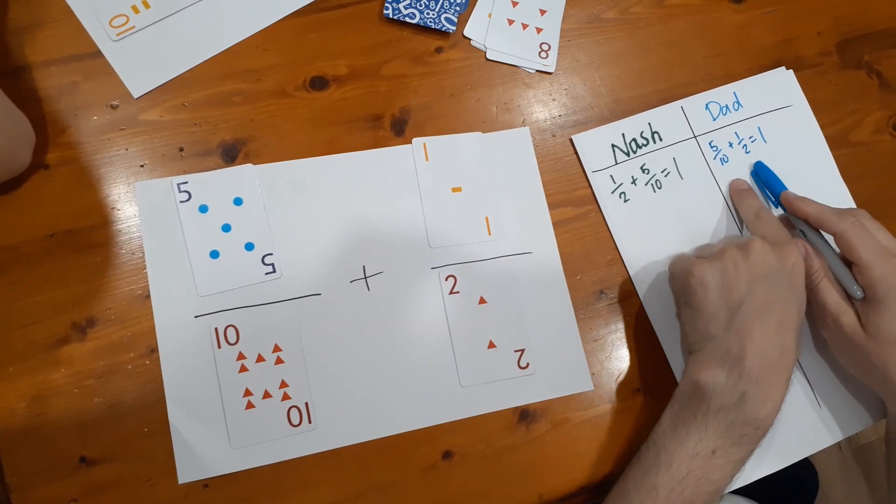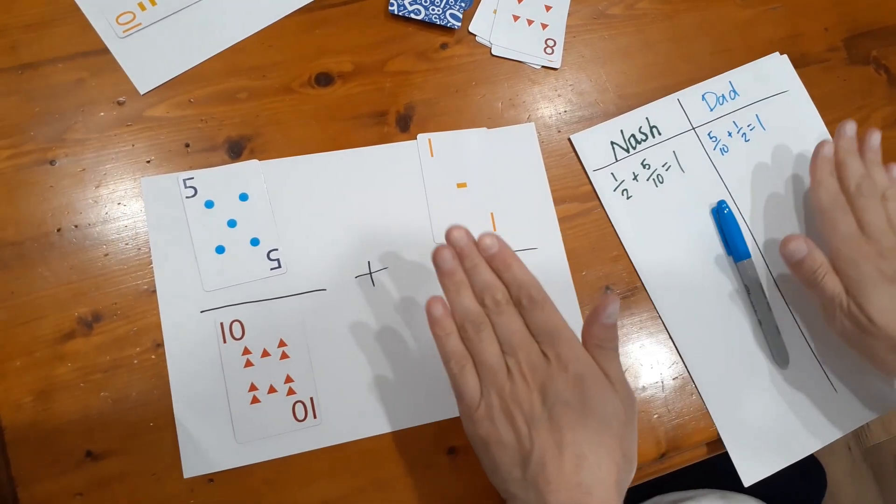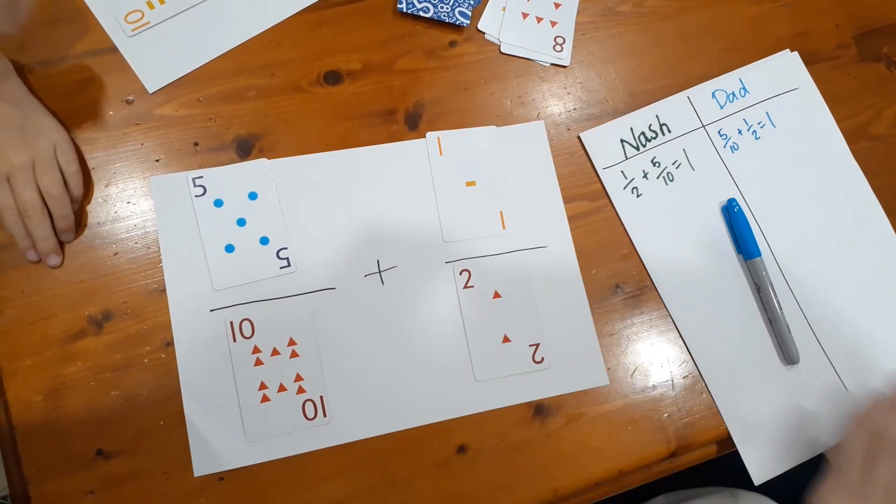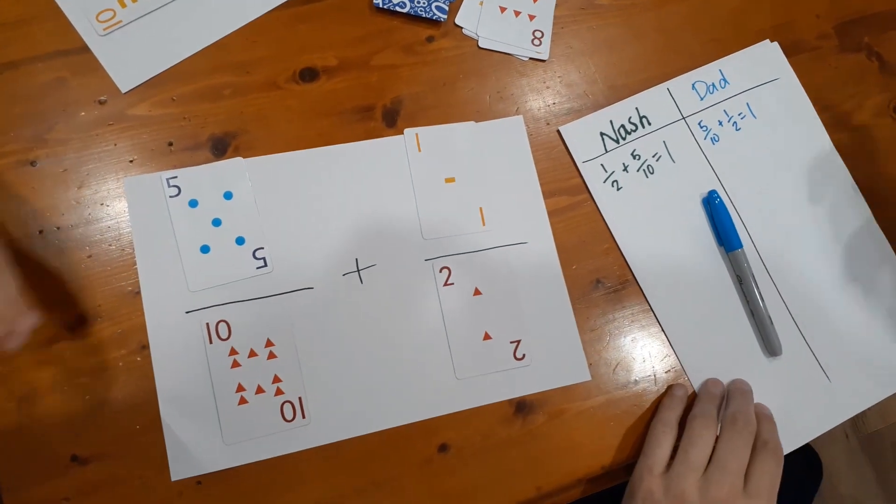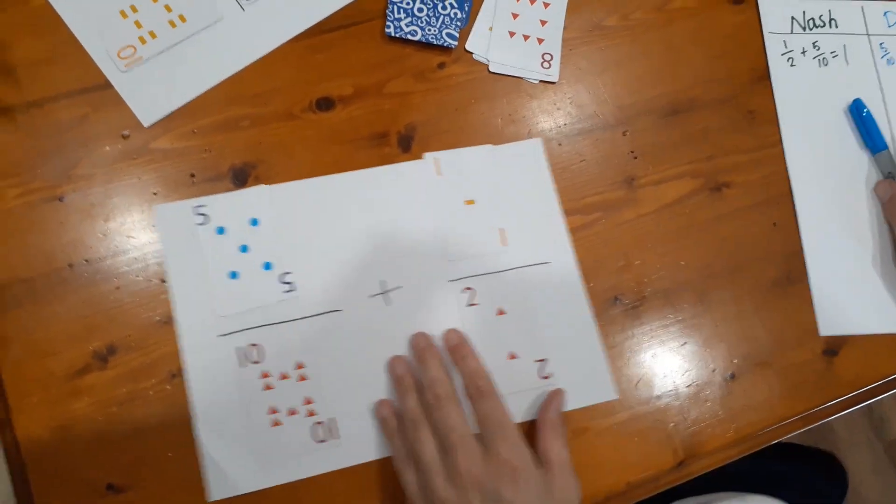Now it is important to say Nash wouldn't be able to make that equation again. Once you've made it, you can't make the same equation twice, and that includes the rule we've made is swapping the two things around. But because I'm a different player, I can make that equation. All right Nashy, your turn.